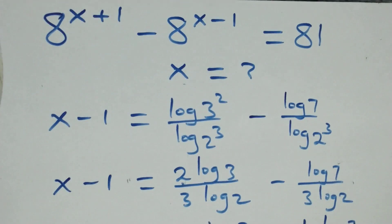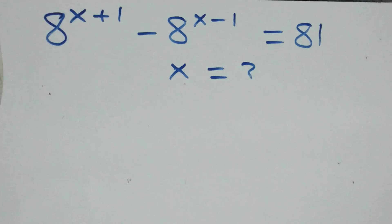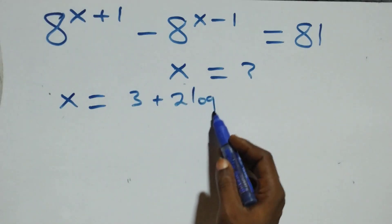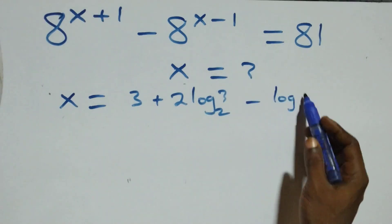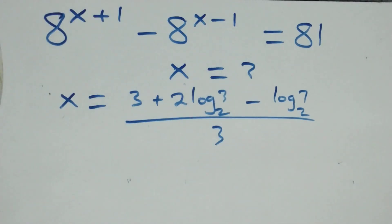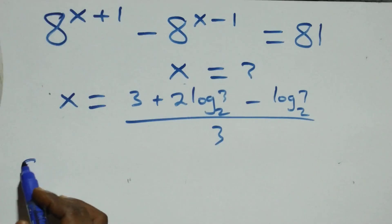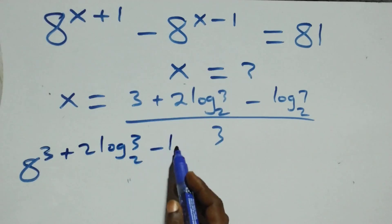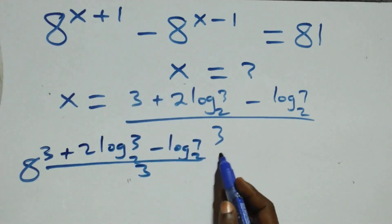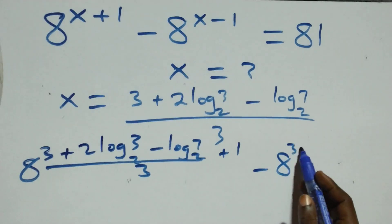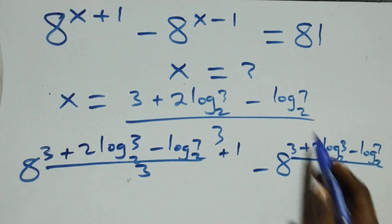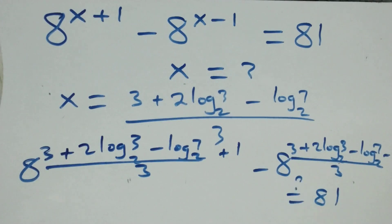Now let's check if this satisfies the given problem. We substitute the value of x, which is 3 plus 2 log 3 base 2 minus log 7 base 2 all over 3, back into the original equation. This gives 8 raised to power that expression plus 1, minus 8 raised to power that expression minus 1, and we check if it equals 81.